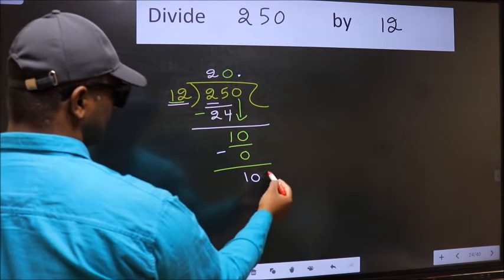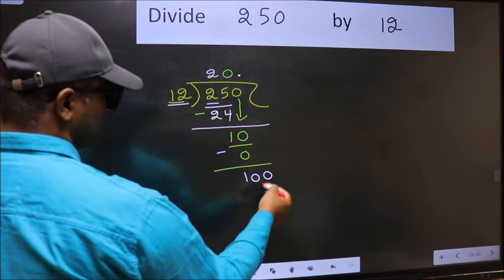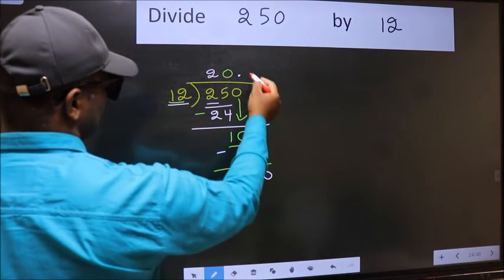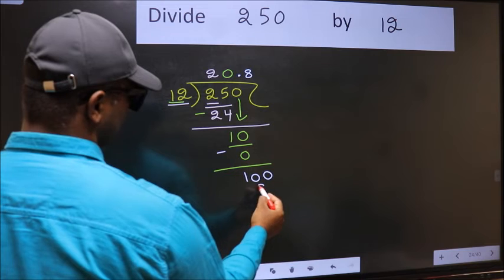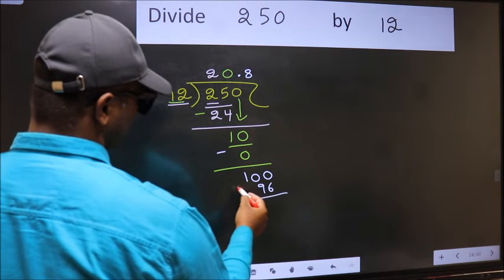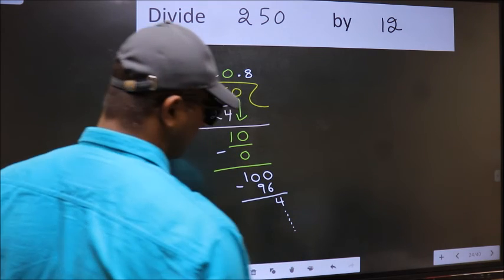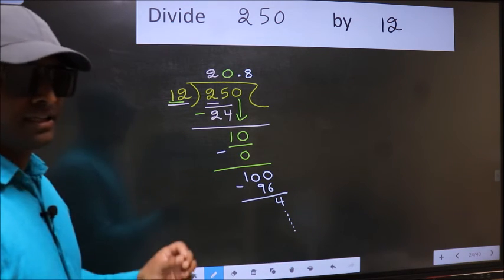You can put dot and take 0, so 100. A number close to 100 in 12 table is 12 times 8, 96. Now you should subtract, you get 4, and continue the division. I am not doing that. Did you understand? Do you understand where the mistake happens? You should not do that mistake.